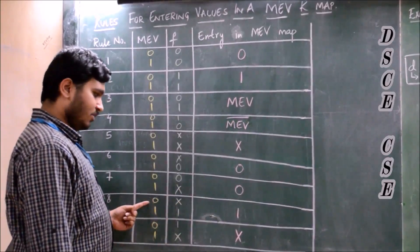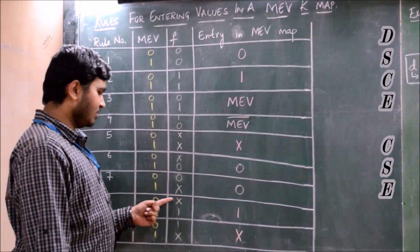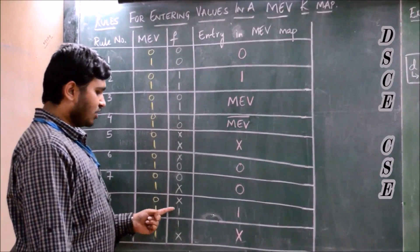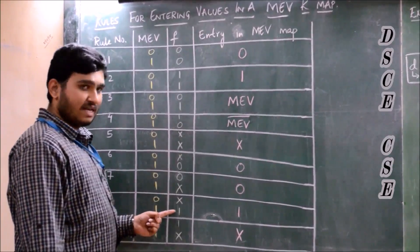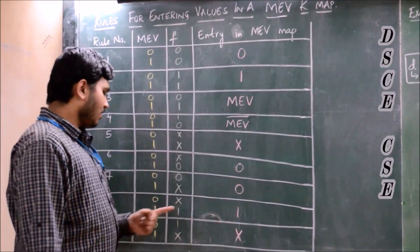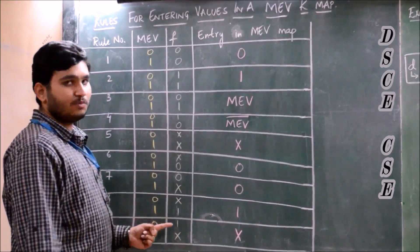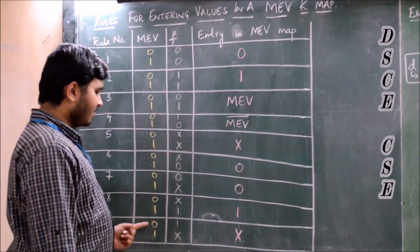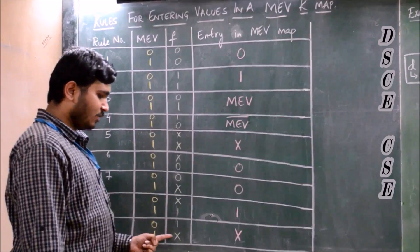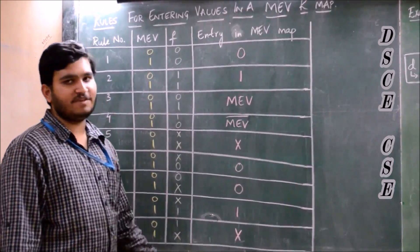For MEV=0 giving don't-care and MEV=1 giving 1, we enter 1 in the MEV map. For MEV=0 giving 1 and MEV=1 giving a don't-care condition, we enter don't-care in the MEV map.